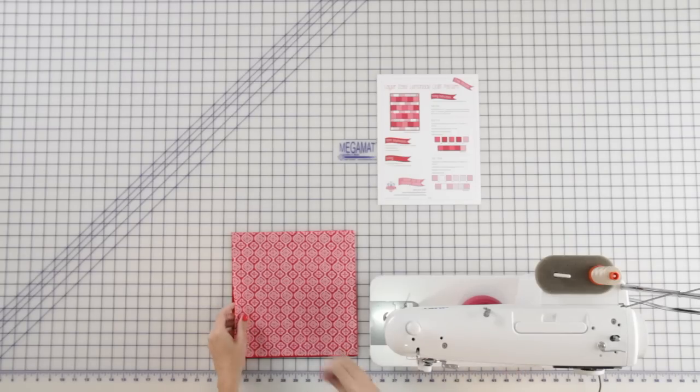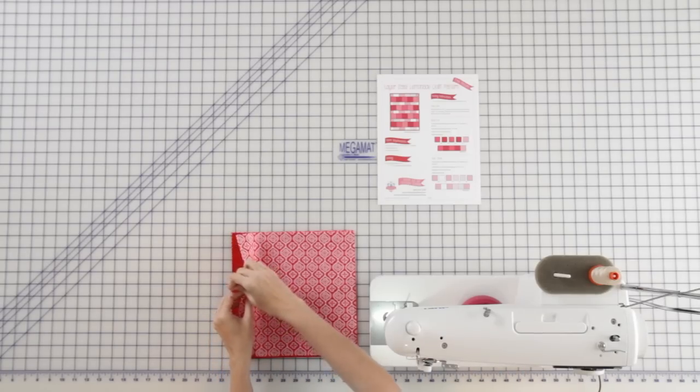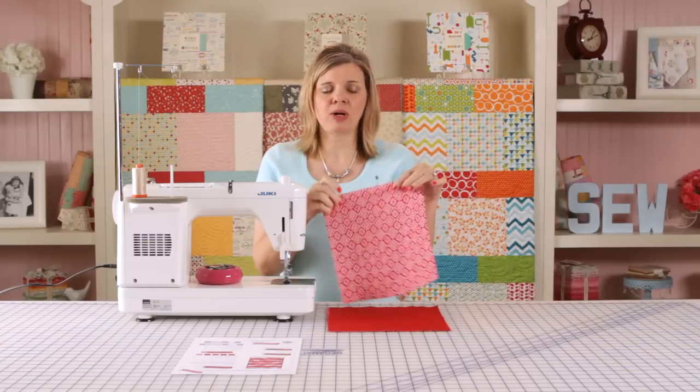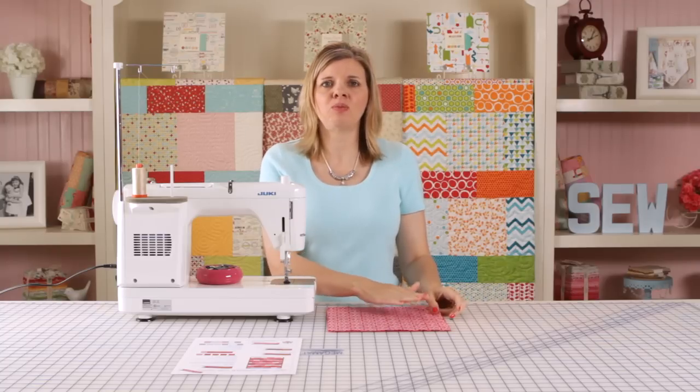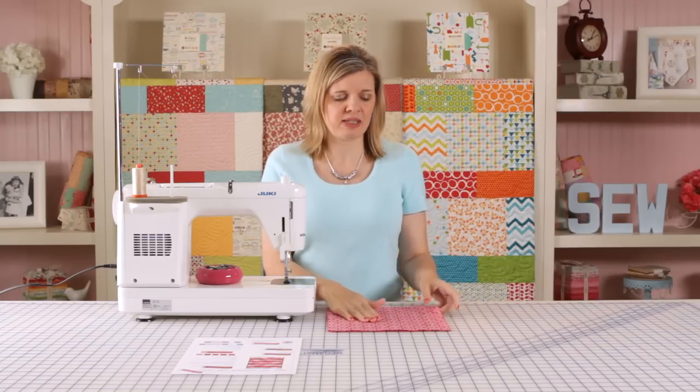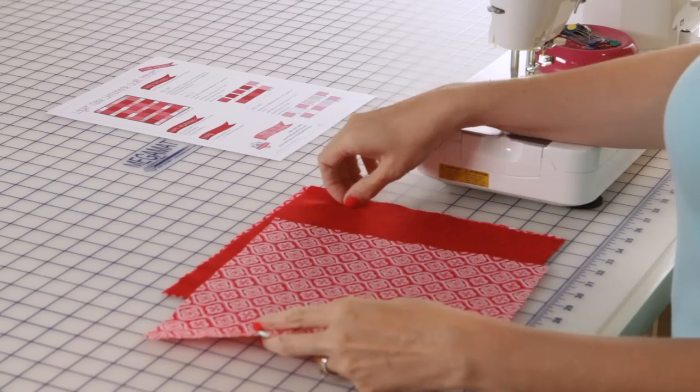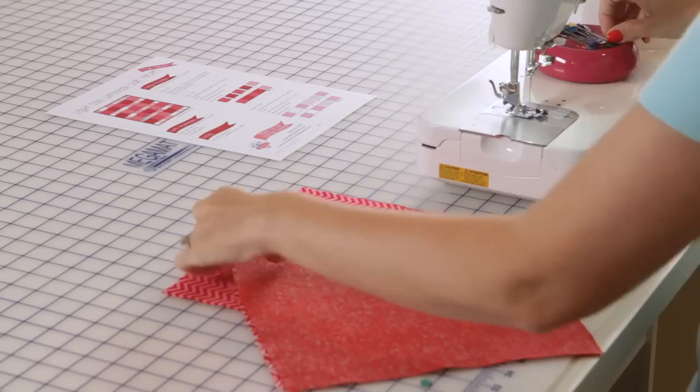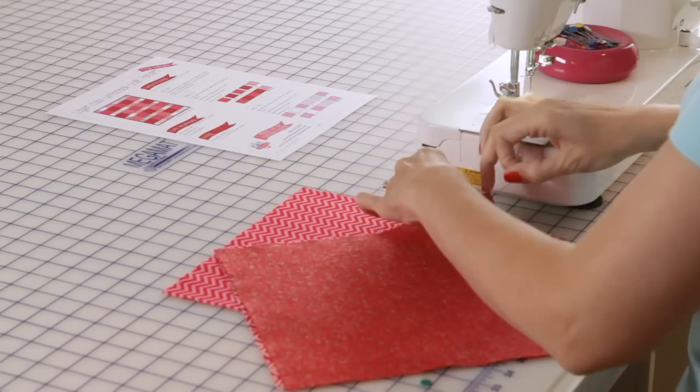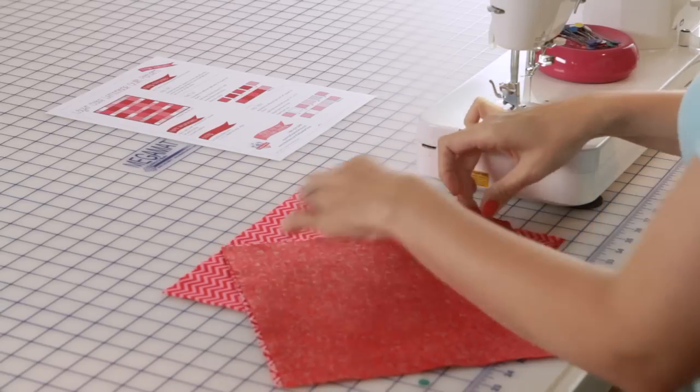The first thing I'm going to do is I'm going to mark my first square on the left with just a simple pin to mark it. And what that's going to tell me is that stays on the left and we're not going to sew a square next to it. We're going to take our first two squares, put them right sides together, and I'm just going to pin one time at the very bottom.